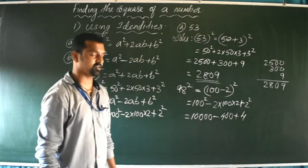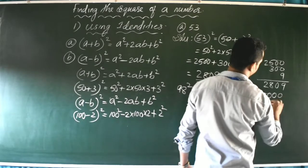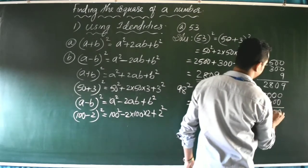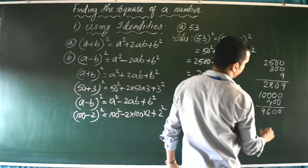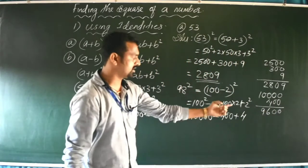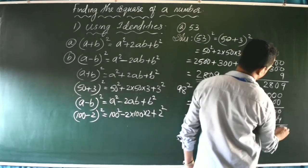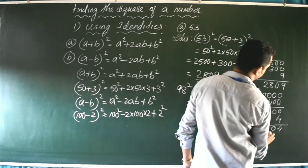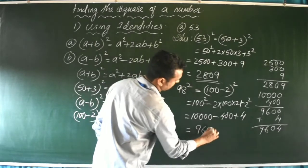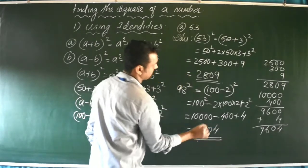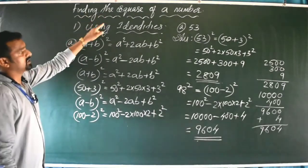First we subtract: 10,000 - 400 = 9,600. Then we add 4, giving us 9,604. So 98² = 9,604. That is the first method of finding a square using identities — using (a+b)² and (a-b)².